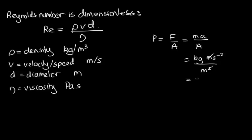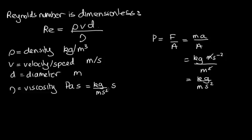So we've got kilograms over metre second squared, moving the s to the minus 2 and writing it as s squared on the bottom. Pascal seconds: pascals are kilograms over metre second squared, times seconds here — that cancels — and we end up with kilograms over metre seconds as the units for viscosity.